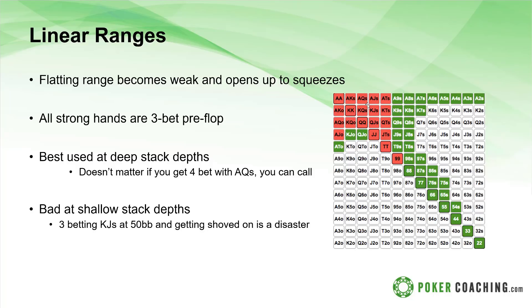If you identify someone using a linear three-betting range, you know when they flat call they hold the weaker portions of their range. This opens them up to more squeezes. Linear ranges are best used at deep stack depths — not just 100 big blinds, but especially at 150 or 200 big blinds — where you're deep enough to call a four-bet with your strong hands.